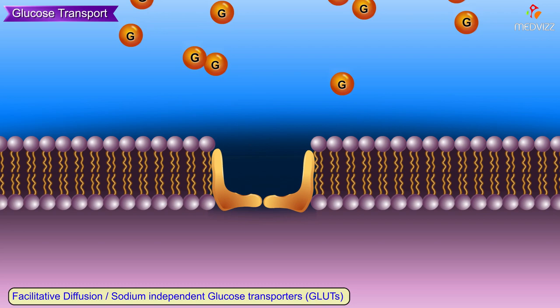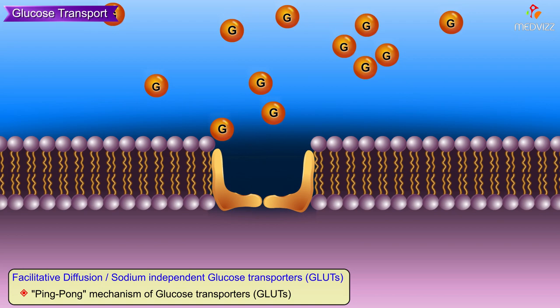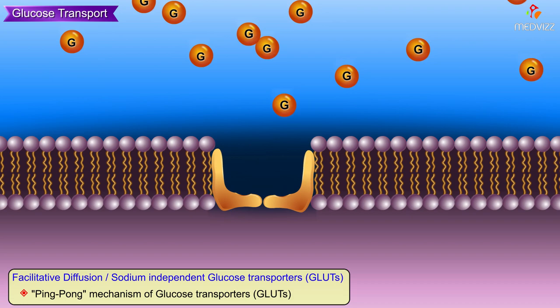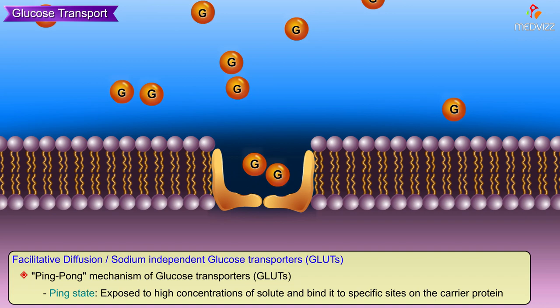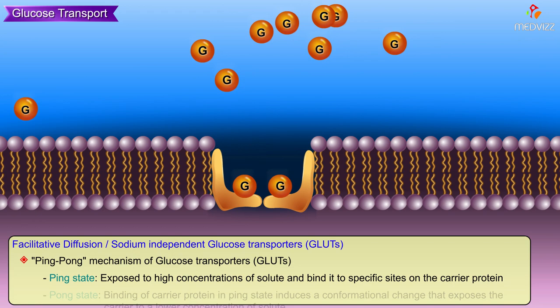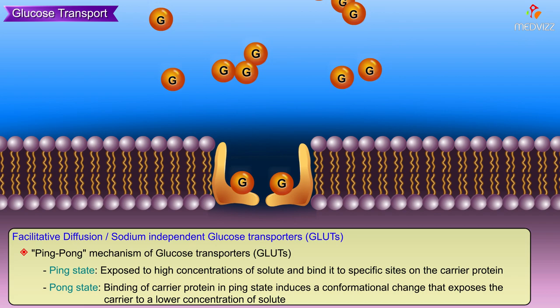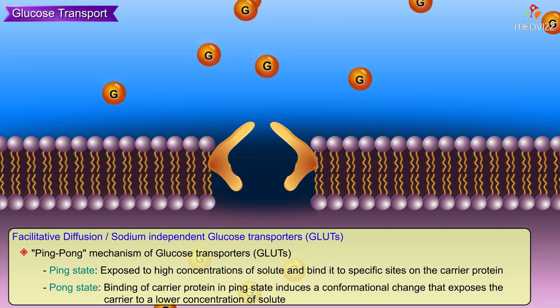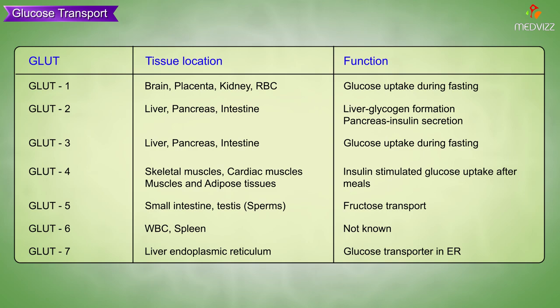Facilitative diffusion uses sodium-independent glucose transporters called GLUTs. They act by the ping-pong mechanism. In the ping state, the transporter is exposed to high concentrations of solute and binds it to specific sites on the carrier protein. In the pong state, binding of the carrier protein induces a conformational change that exposes the carrier to a lower concentration of solute, transporting glucose down the concentration gradient.